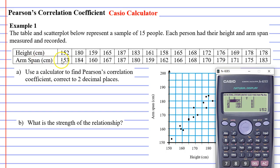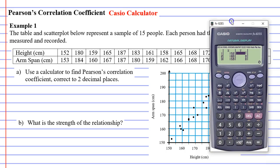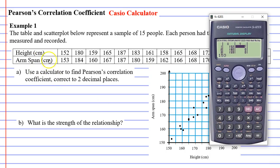Now we need to enter our arm spans. So we'll go across to our Y values and we're going to enter them in the same way. So we've got 153 as our first arm span equals, then 184 equals. I'm going to pause and keep going.